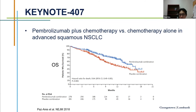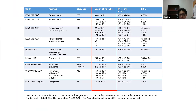KEYNOTE-189 was for adenocarcinoma and KEYNOTE-407 was for non-adenocarcinoma — advanced squamous cell carcinoma. Both compared chemo plus pembrolizumab versus chemotherapy alone, showing pretty good overall survival benefit with the combination. The bottom line across all first-line trials is that immunotherapy-based approaches — be it monotherapy or any combination with chemotherapy — really outperform chemotherapy alone. It is very rare that we start chemotherapy first for stage four lung cancer these days. Most patients who don't have a targeted therapy option get an immunotherapy-based option.